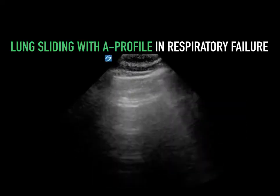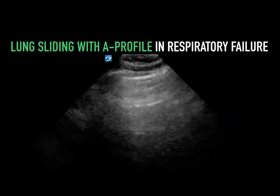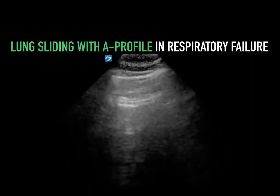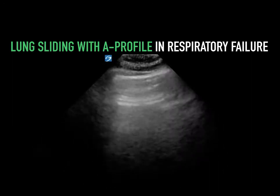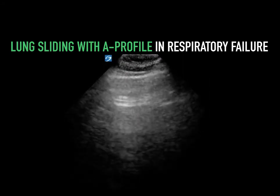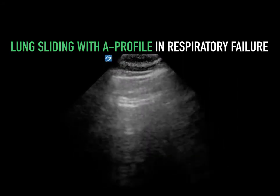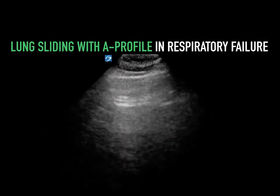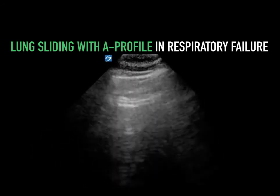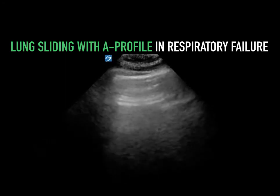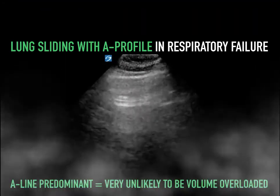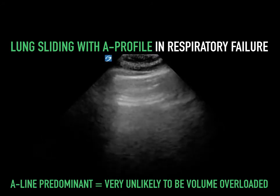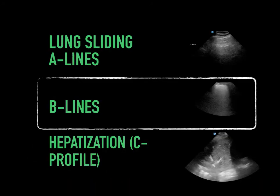Why is lung sliding with the A profile so important in respiratory failure? It helps you hone in on specific differential diagnoses including COPD, asthma, pulmonary embolism, and a variety of other neurological and metabolic disorders. Technically, in patients who have a diffuse A profile of lung sliding and A lines, they are very unlikely to be volume overloaded — not impossible, just much less likely.